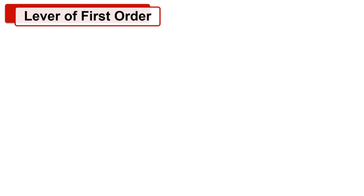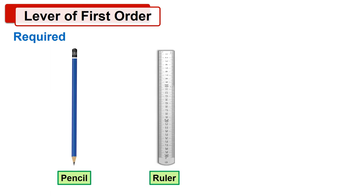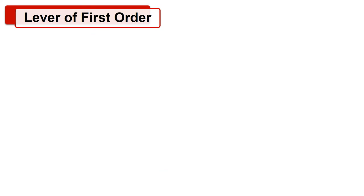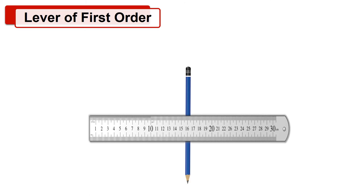Let's see the lever of first order. Let's do a simple experiment. For this we require a pencil, a ruler, and a paper weight. Now place the pencil on a flat surface, then place a ruler on the pencil at right angles with it. Put a paper weight on one end of the ruler. Now press the other end of the ruler with your finger to lift the weight.